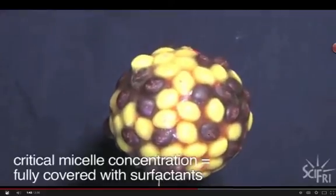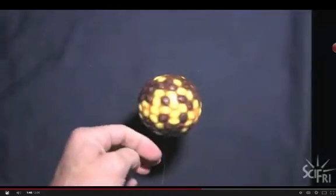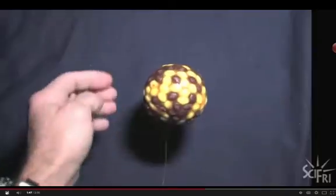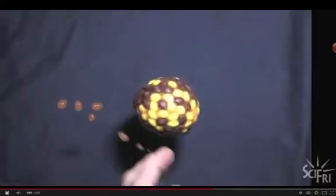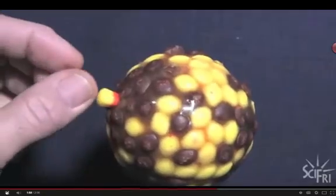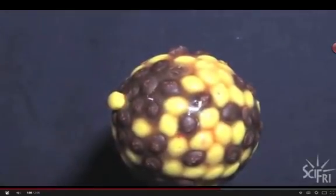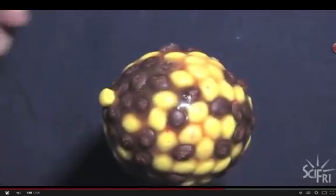It's called the critical micelle concentration. Or in candy corn, the critical candy corn concentration. Once it hits this concentration, all the dirt and the oil and the grease floats off of your fabric, and it mixes with the water, and then you pour the water off, and you're left with clean clothes.